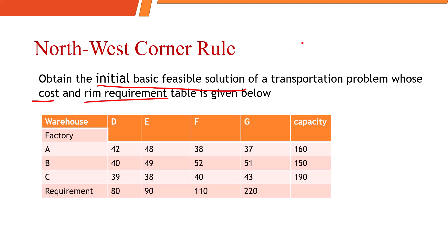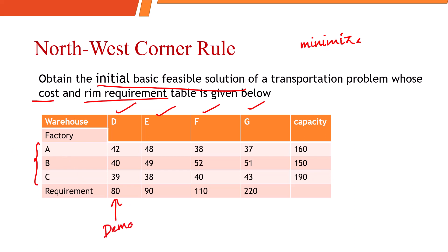In any transportation problem, we are always interested in minimizing the cost. We are given with the source — here we have three different factories, A, B, C — and accordingly we are given the destinations E, F, and G. For every destination, there will be a demand, and from every source, there is a supply capacity.